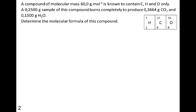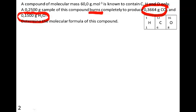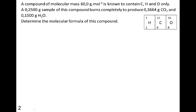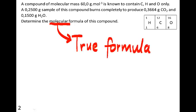A compound of molecular mass 60 grams per mole — this is the true molecular mass — is known to contain carbon, hydrogen, and oxygen. This question is asked in a different way. We are told we have a sample of the compound, we burn it, and it produces carbon dioxide and water, and we are given the masses of each. From this we have to get the molecular formula, also called the true formula — they are synonyms.